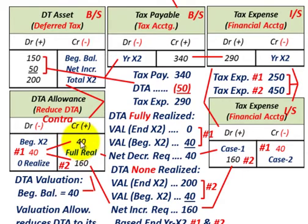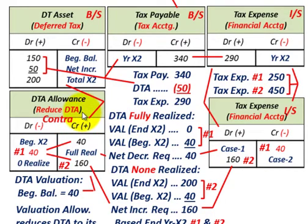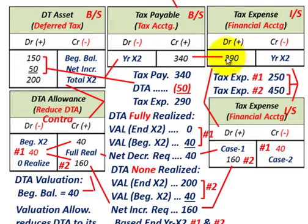We looked at the case where you fully realize your deferred tax asset versus not realizing any of it. We started at $160,000 — a deferred tax asset of $200,000 with a $40,000 allowance — because $40,000 of it was not expected to be realized. The valuation allowance account affected our tax expense, either increasing or decreasing it depending on how the allowance was adjusted. That summarizes our topic.